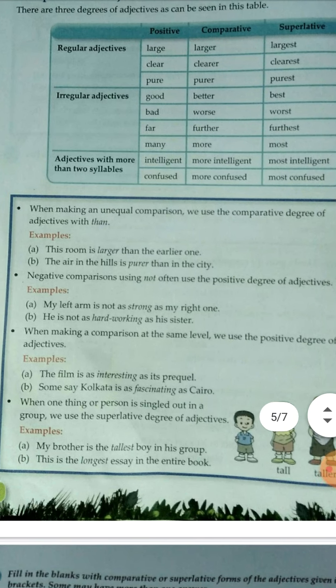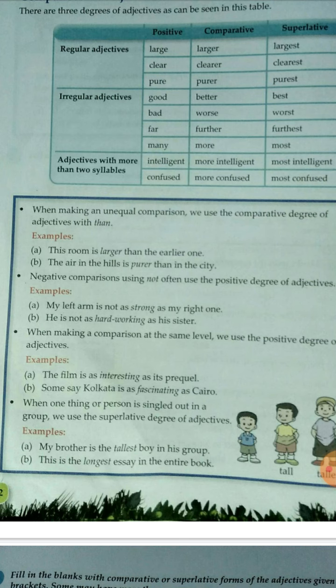Now here are some important rules to keep in mind. We use the comparative degree whenever we make an unequal comparison. For example: 'This room is larger than the earlier one,' and 'The air in the hills is purer than in the city.' Comparative forms are always followed by 'than' — you can see 'larger than' and 'purer than' in these sentences.